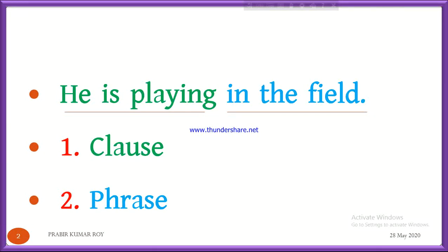Why is the first part called Clause, and why is the second part called Phrase? Actually, in the first part we have both subject and verb. But in the second part, we have no subject and no verb. So, in a clause we have a subject and a verb, and in a phrase we have no subject and no verb.